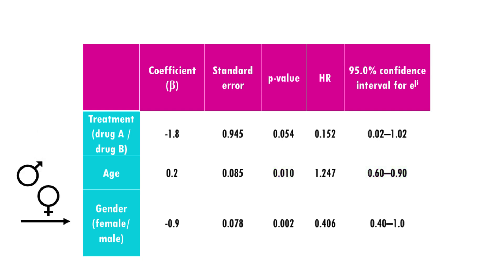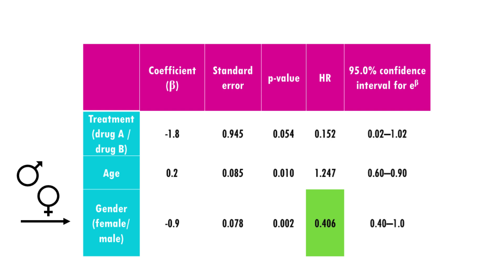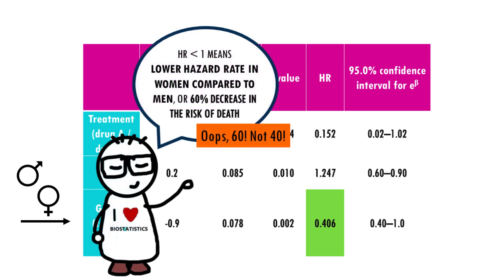Finally, gender has a negative regression coefficient, meaning that women have a decreased log hazard of death compared to men. To get a more intuitive interpretation, we exponentiate it and look at the hazard ratio, which is approximately 0.4. In other words, women have a 40% lower risk of death compared to men, given the same treatment and age.